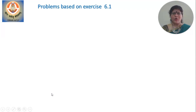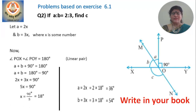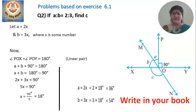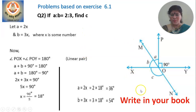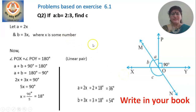These are problems based on exercise 6.1. This is the second question: if A is to B equal to 2 is to 3, find the value of C.